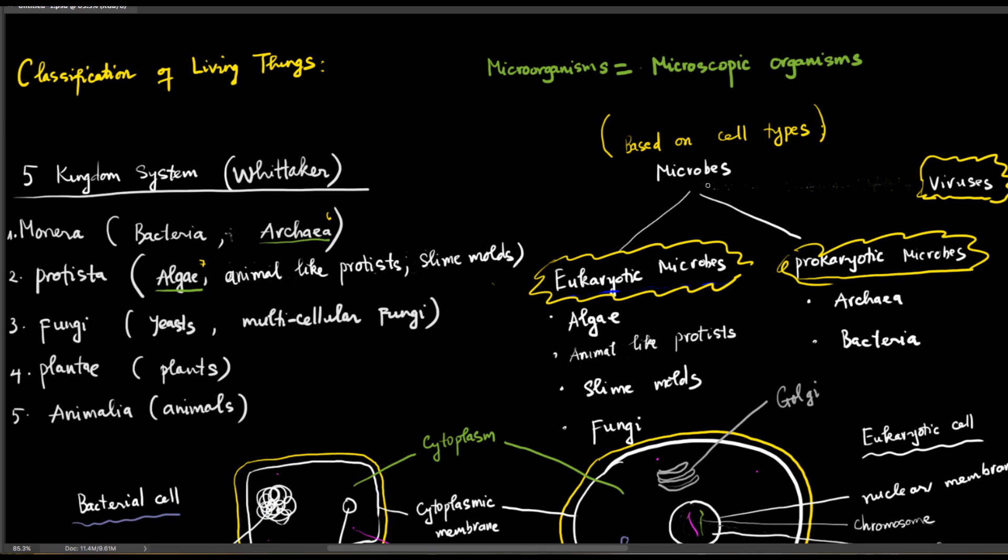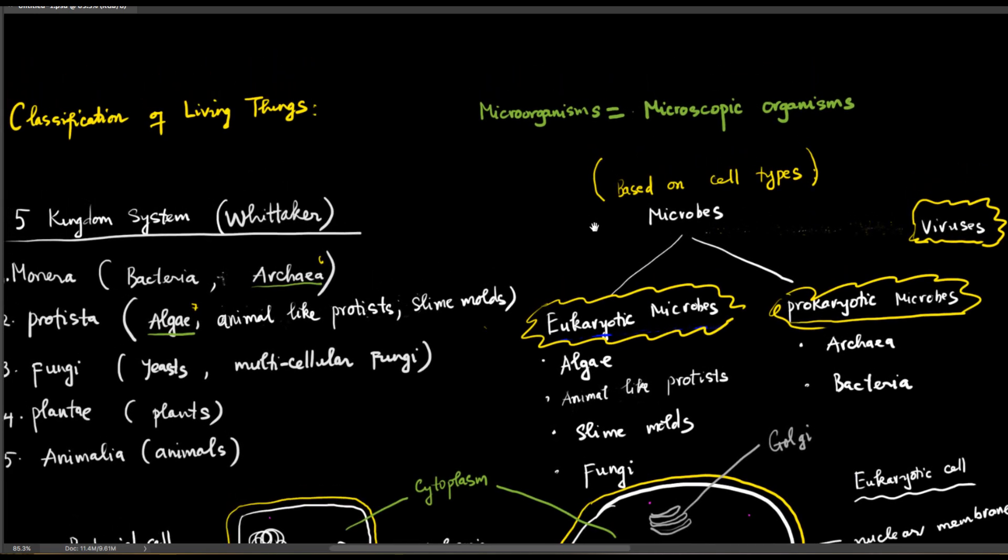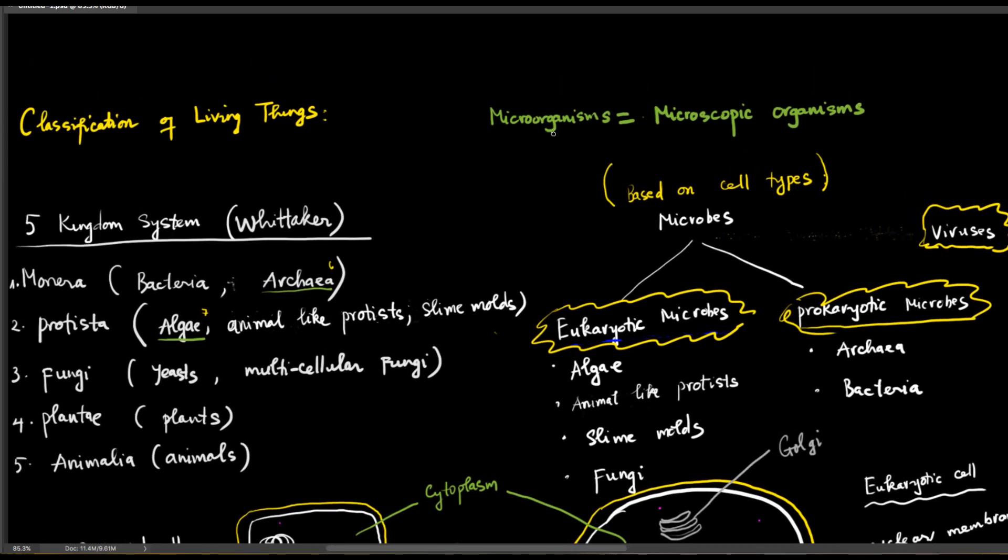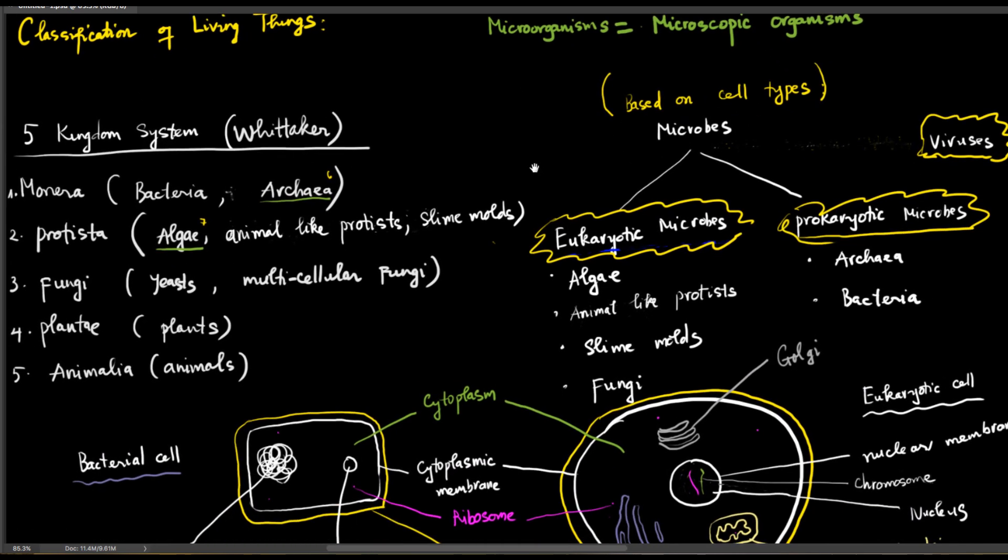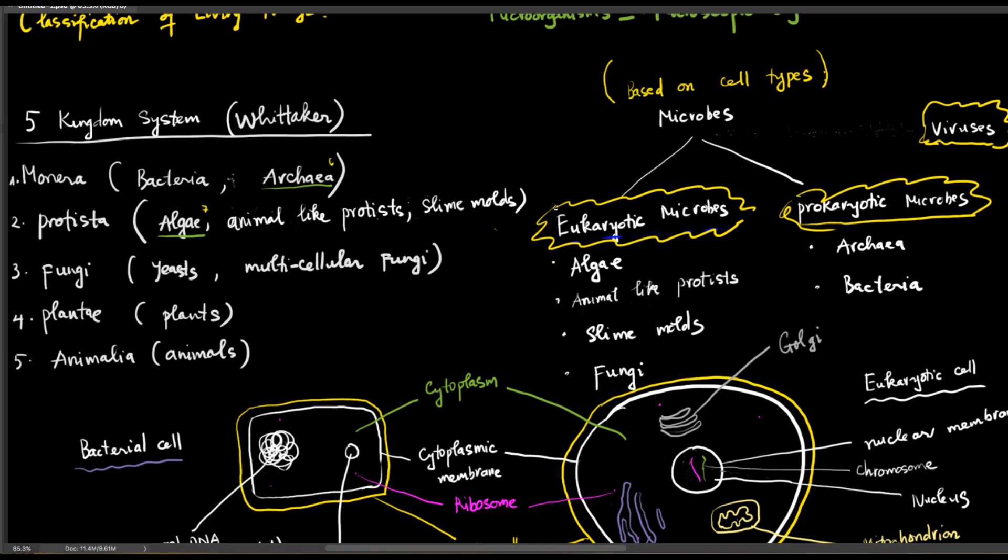So the question here is which among these are microorganisms? To answer this question, we need to go back to the definition of microorganisms. Microorganisms are organisms of microscopic size, meaning they are super tiny. And in order to see them, you need to use a microscope. So by that definition, plants and animals are not microorganisms.